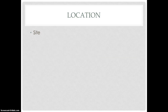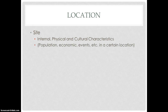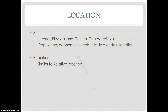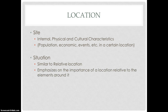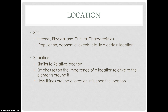There are two ways to describe location: site and situation. Site refers to the internal physical and cultural characteristics of an area, and can include population and economic factors. Situation is similar to relative location — it describes things or events close by, but emphasizes the importance of a location relative to the elements around it. For example, when discussing situation, you would talk about how a lake five miles to the east influences various aspects of a city, rather than the city itself.